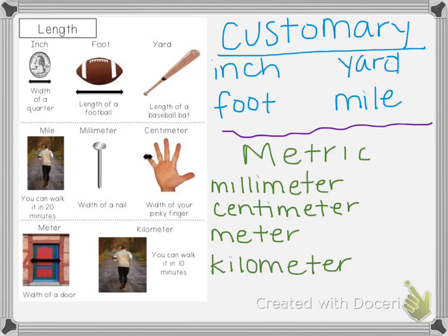When we're measuring length, we're going to use tools like rulers, measuring tape, a meter stick, and different things like that. But when we're looking for an estimate, we can use the benchmarks to help us. For example, if we wanted to know about how long a bike is, we know that a bike would be a little bit more than a baseball bat, so we could say it would be about one and a half yards.